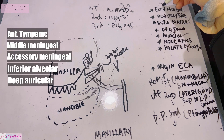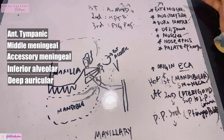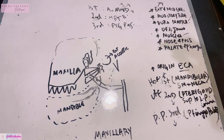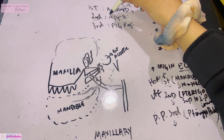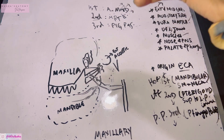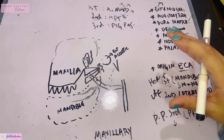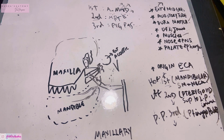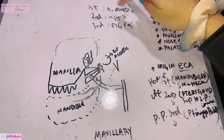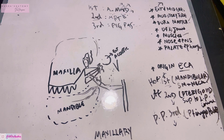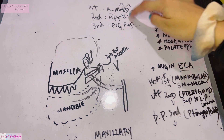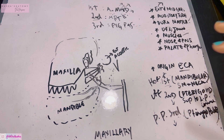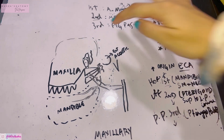The second part runs superficial to the lower head of the lateral pterygoid. It supplies all the muscles of mastication: the masseter via the masseteric artery, the temporalis via the deep temporal arteries, the pterygoid muscles via the pterygoid muscle branches, and finally the skin of the cheek via the buccal branch.